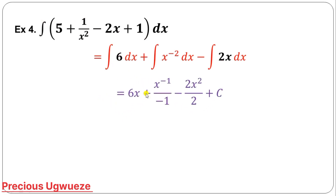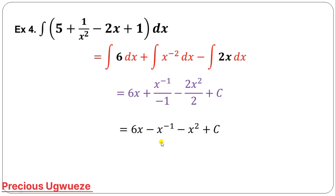Integrating the constant 6 gives 6x. For the next term, minus 2 plus 1 is minus 1, divide by the new power minus 1. The next term has power 1, giving 2x squared over 2. Simplifying: 6x comes down, the negative signs cancel to give minus, and 2 over 2 simplifies. Adding constant C gives the result, and you can further convert back to fraction form if desired.